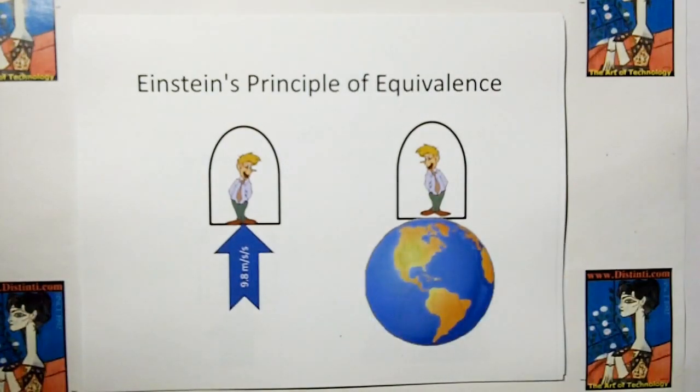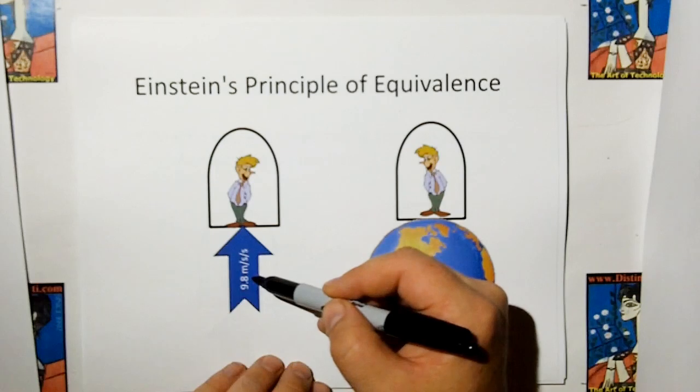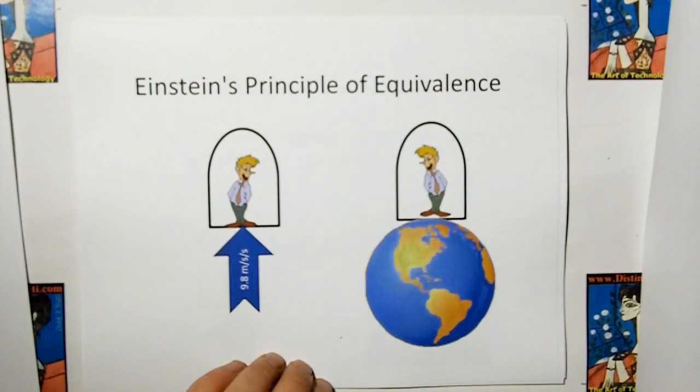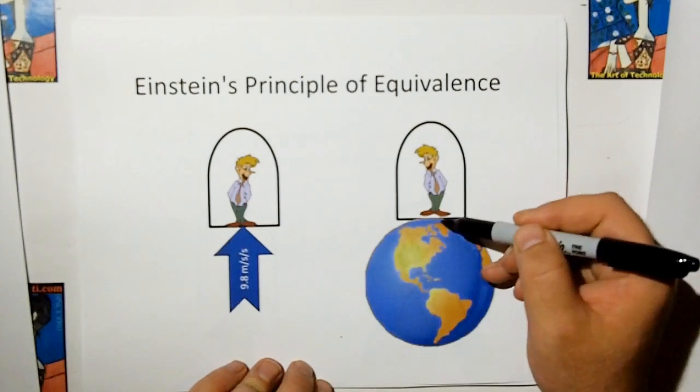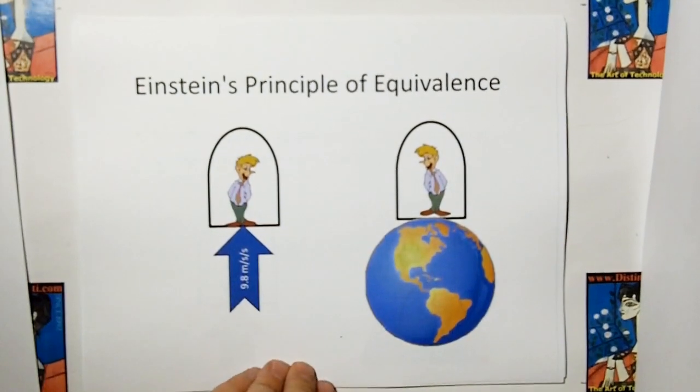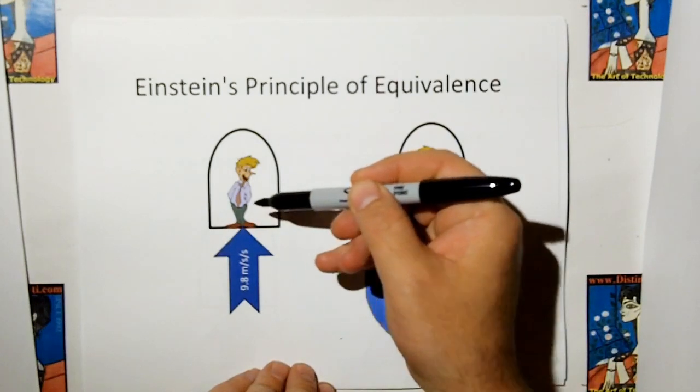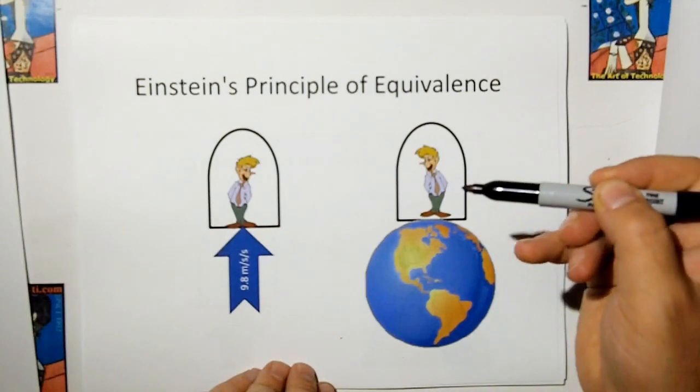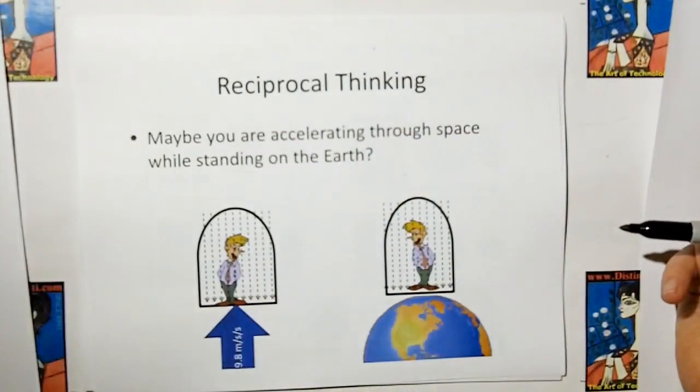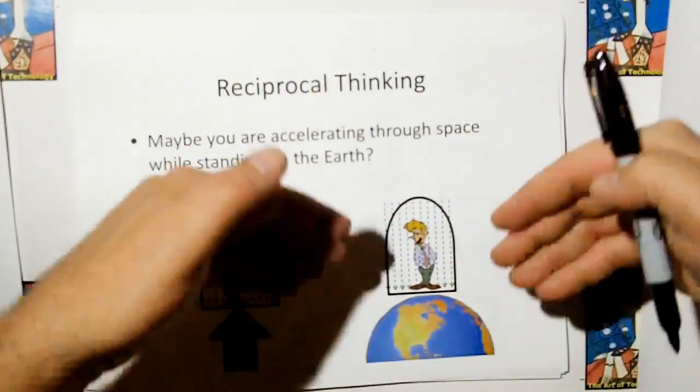Let's look at Einstein's principle of equivalence, one of my favorite things in the universe. Einstein stated that if you're in a spaceship and you're being accelerated at 9.8 meters per second squared, that you're going to be held against the bottom of the spaceship. And you will not, inside your spaceship, you will not be able to tell the difference if that spaceship were just sitting on the Earth. You cannot tell the difference from inside your spaceship, whether you're on the Earth or accelerating through space at 9.8 meters per second squared. So, if we do reciprocal thinking then, we say then, well, if accelerating through space is similar to standing on the Earth, then why can't standing on the Earth be the same as accelerating through space? Reciprocal thinking. So, maybe space, since you're accelerating through space, maybe space is being accelerated toward the Earth.